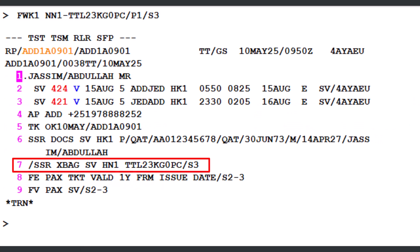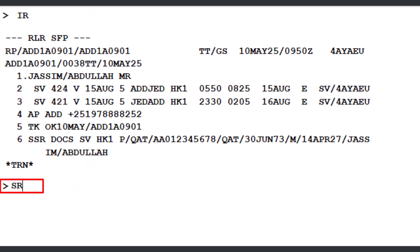Line number 7 of the PNR has been updated with the requested excess baggage service. An SSR for excess baggage can also be entered using the SR command, followed by XBAG (service code for excess baggage), followed by SV (airline code for Saudi Arabian Airlines).